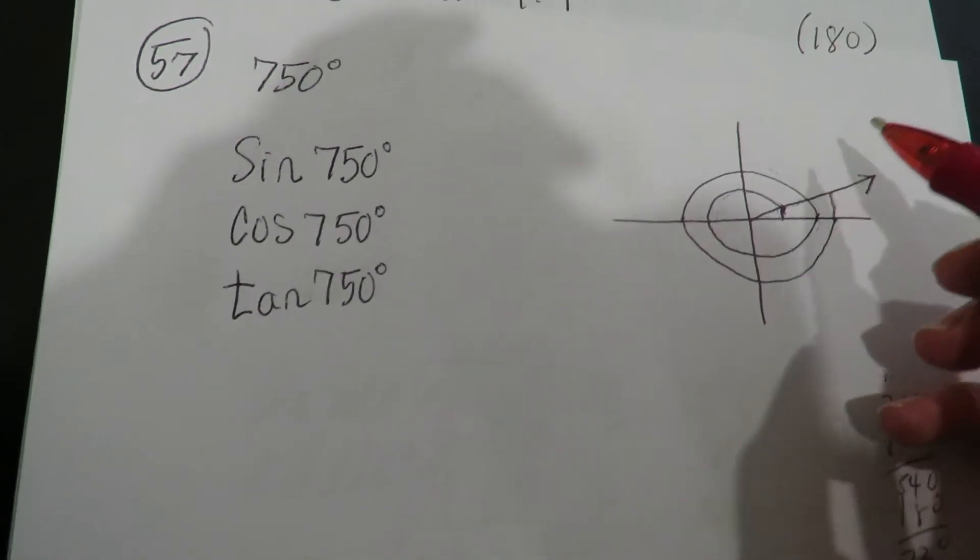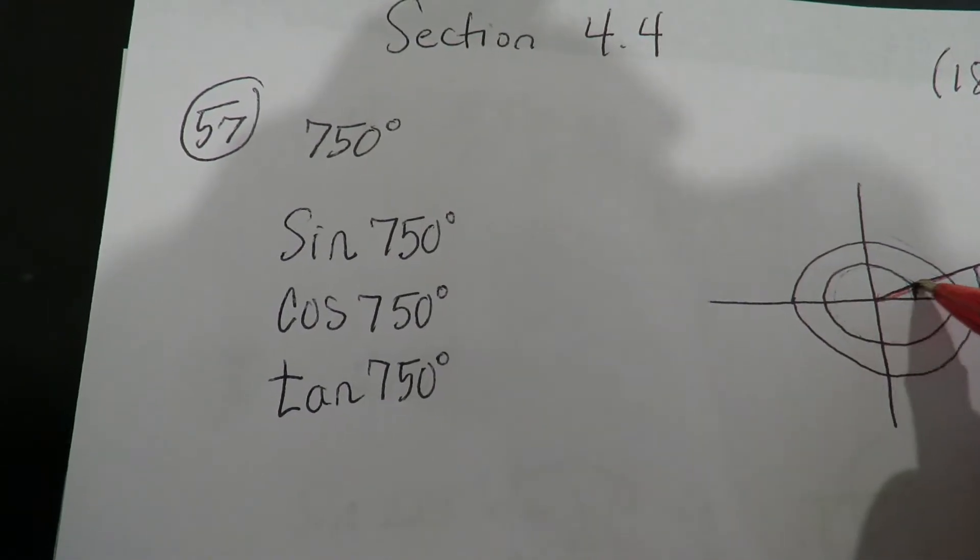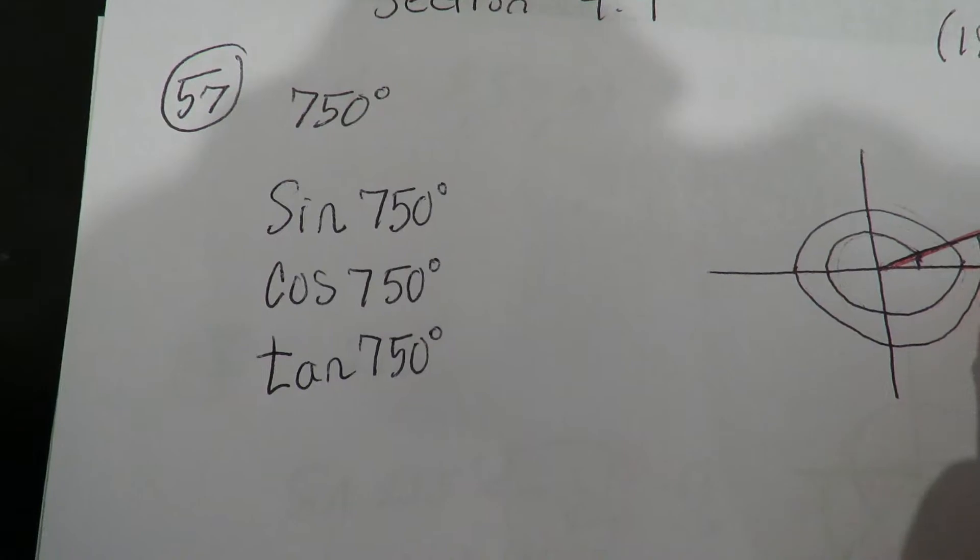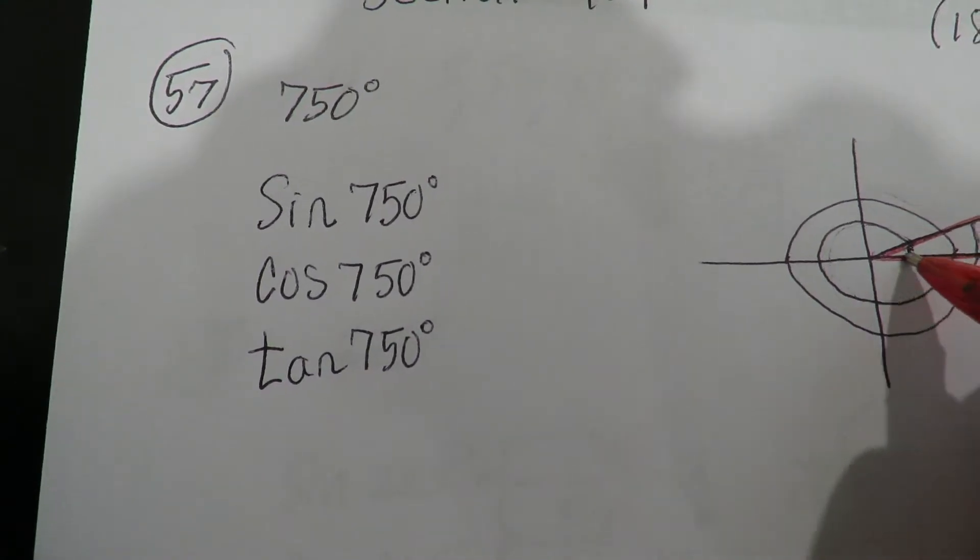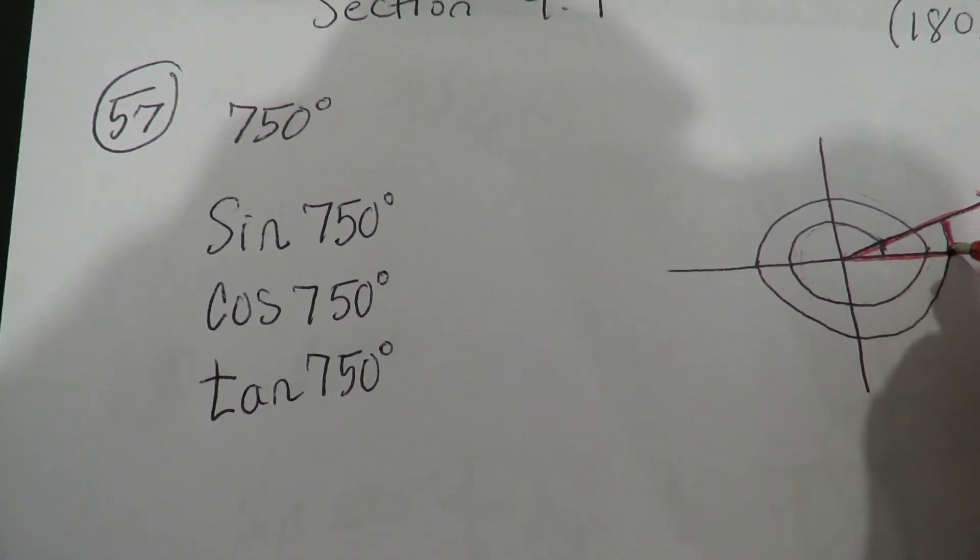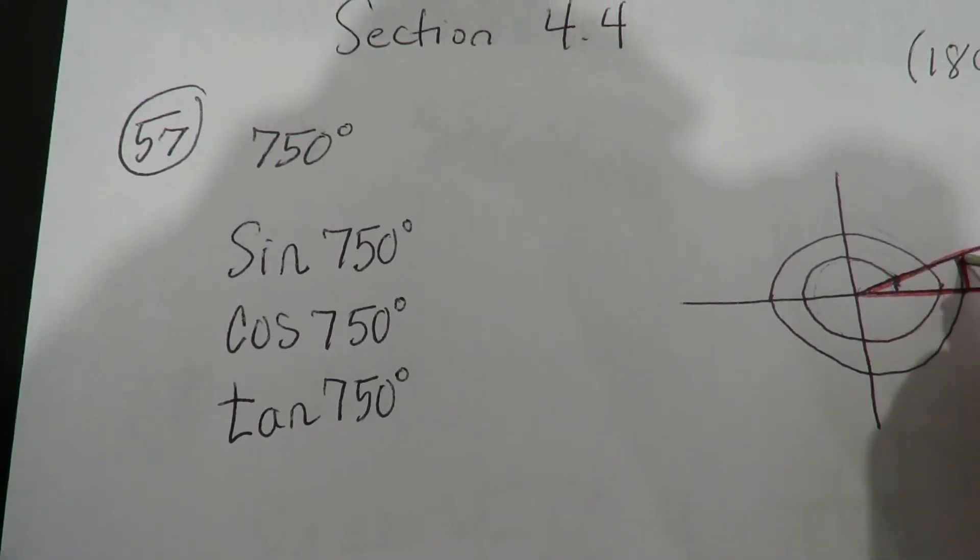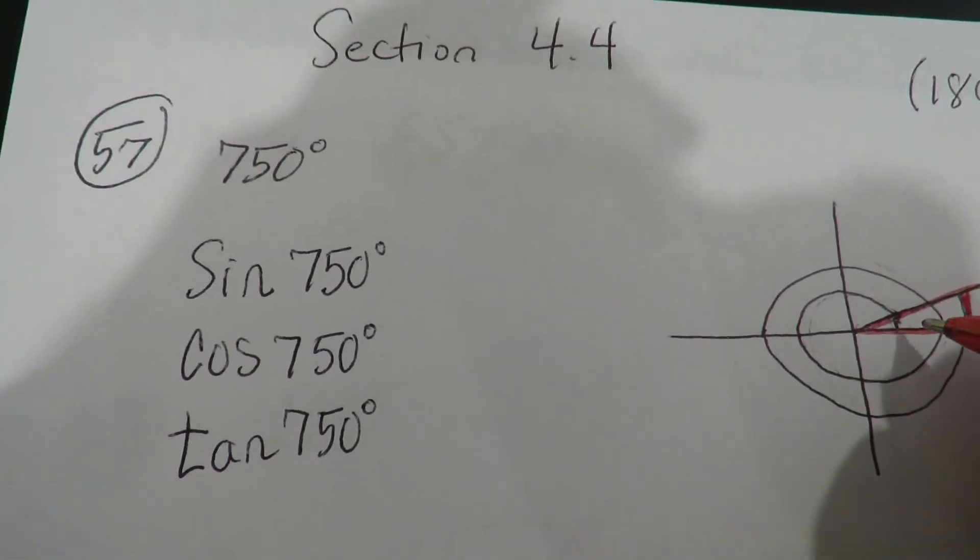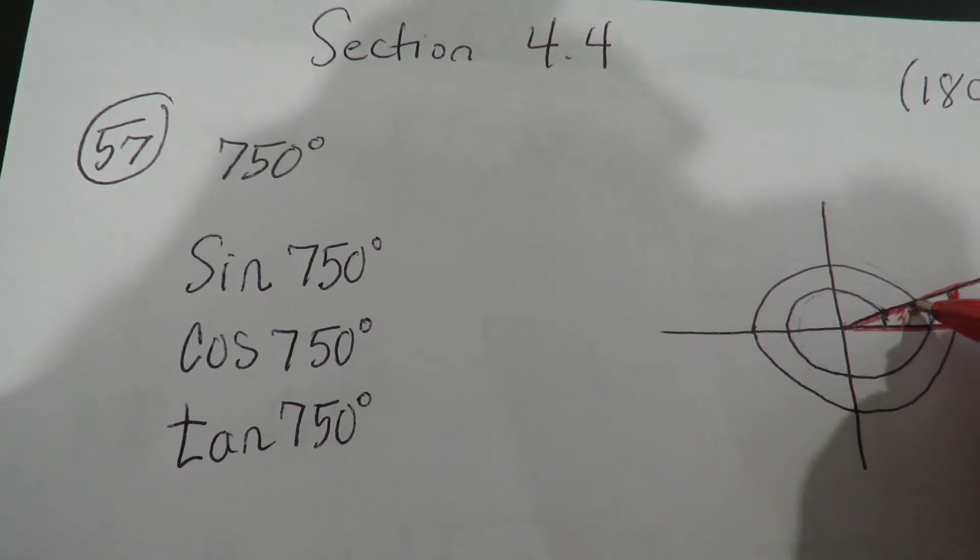So if we go back to that, I said it's always formed by the terminal side and the horizontal in that quadrant. So that's going to be right here. And the reference angle is always positive. It's always positive. So here we have the 30 degrees.